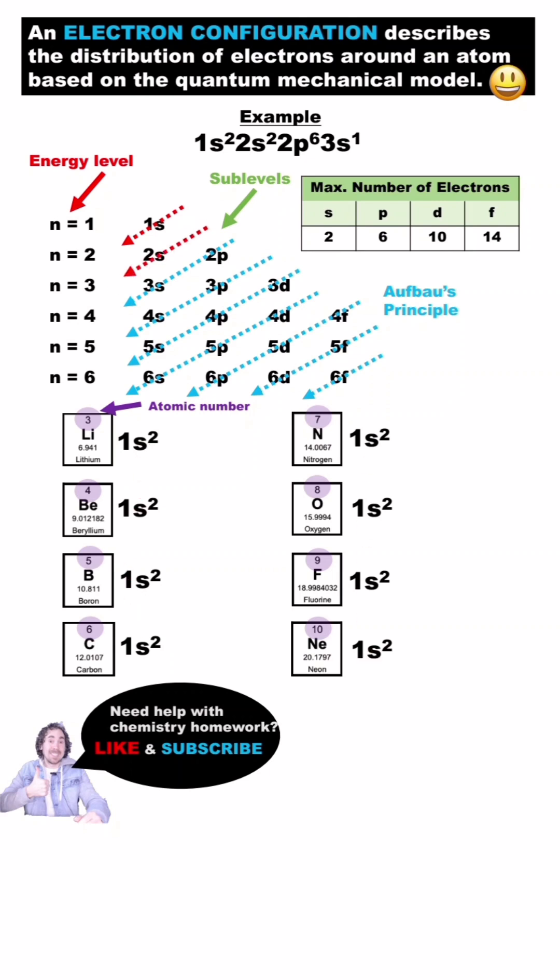Next is the 2S. Since lithium only has 3 electrons, I'll put a 1 here, and the electron configuration is complete. Beryllium has 4 electrons, so I'll put a 2 here, and now its electron configuration is complete.